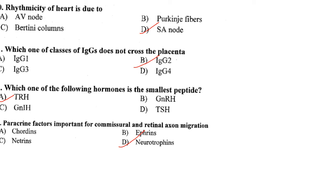Which class of IgG does not cross the placenta? IgG crosses the placenta, but IgG2 does not cross the placenta. The smallest peptide hormone is TRH — thyrotropin releasing hormone — which contains only three amino acids.